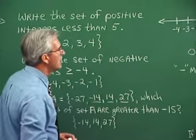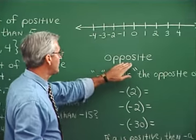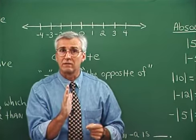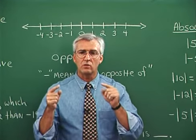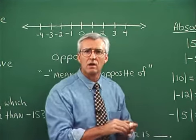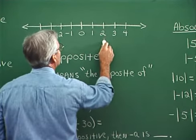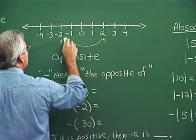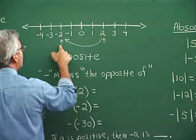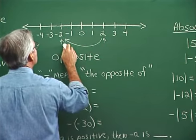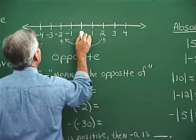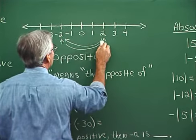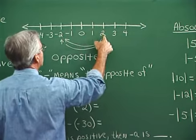Another idea associated with the number line is the idea of opposite. We think of zero in the middle, and when we think of opposite, we go the same distance on the other side of zero. For example, the opposite of 2 would be negative 2 — same distance but on the other side of zero. The opposite of negative 2 is 2, because given the distance from zero, the same distance on the other side puts us at 2. The opposite of negative 2 is 2; the opposite of 2 is negative 2.